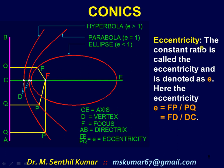The Eccentricity: The constant ratio is called the eccentricity and is denoted as small e. The eccentricity e is equal to FP by PQ in the case of ellipse, parabola, and hyperbola — it is constant. Alternatively, it can be expressed as FD by DC for a parabola, and FD by DC for a hyperbola.